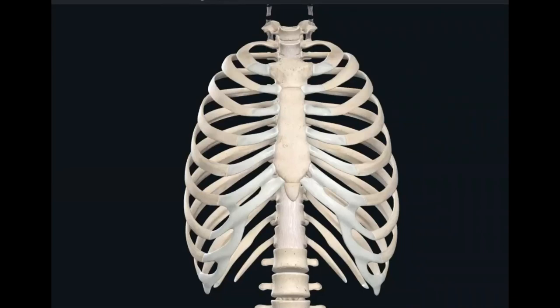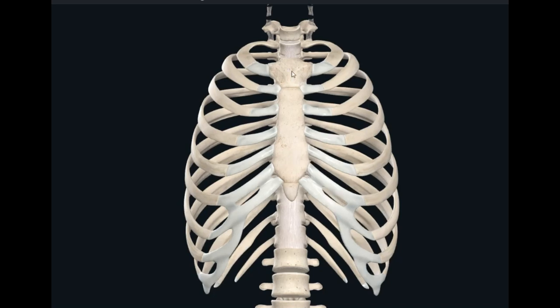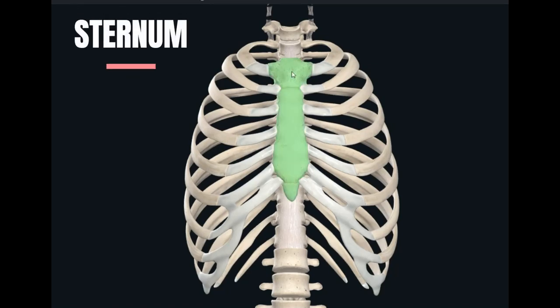Hello students, today we will talk about the surface landmarks of the thorax. In this image, you can see the anterior view of your thoracic cage. In this thoracic cage, you can see that this bone is actually your sternum. The sternum has three parts.